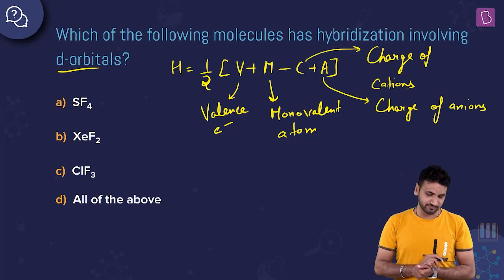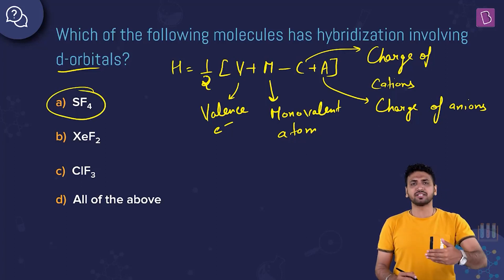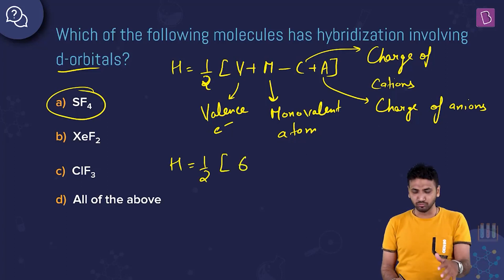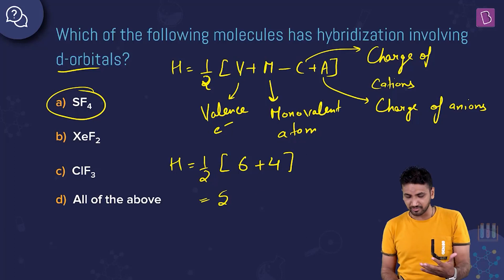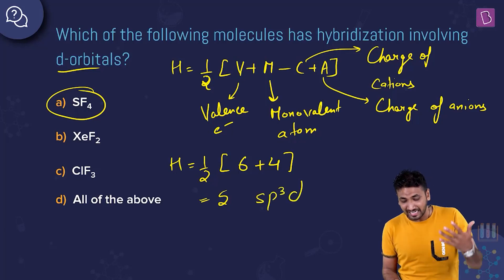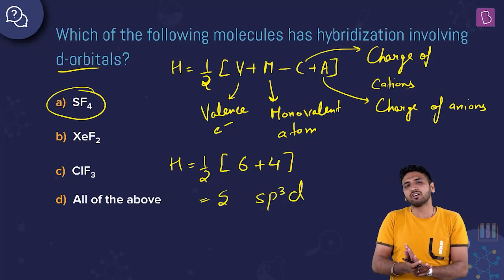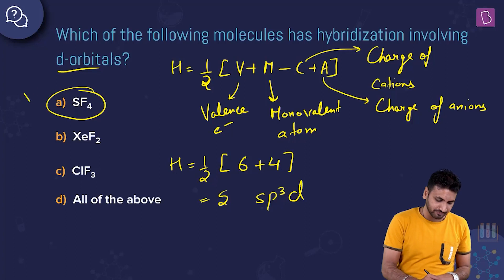Let's start with SF4. Sulfur has six valence electrons. Fluorine is monovalent, so we get one by two of (6 + 4), with no charge: 10 by 2 equals 5. A result of 5 means sp3d hybridization — one of the d orbitals of sulfur participates in bonding.